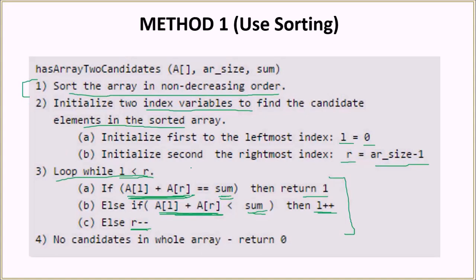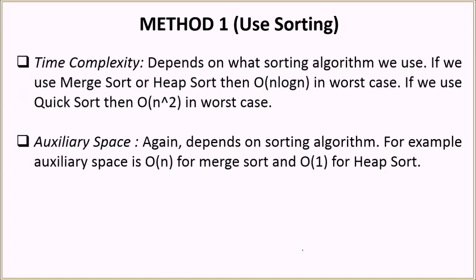If the while loop iterates through the whole array and still hasn't returned 1, it means there are no valid candidates, so we return 0. The time complexity of this solution depends on the sorting algorithm used: merge sort or heap sort gives O(n log n), while quick sort gives O(n²). For auxiliary space, merge sort uses O(n) and heap sort uses O(1).